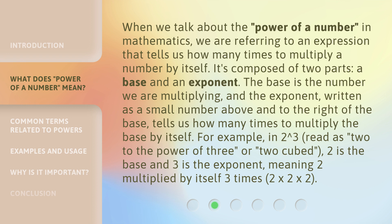For example, in 2 to the power of 3 (read as 'two to the power of three' or 'two cubed'), 2 is the base and 3 is the exponent, meaning 2 multiplied by itself 3 times: 2 × 2 × 2.